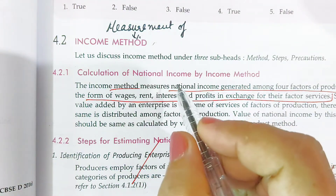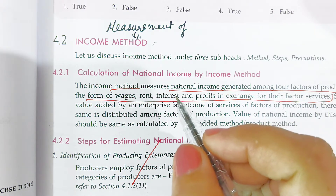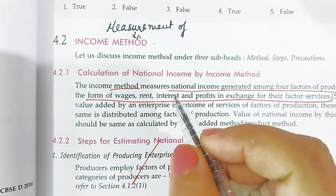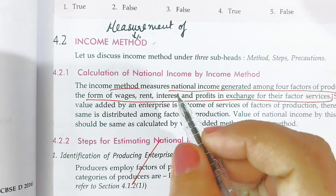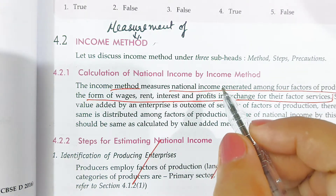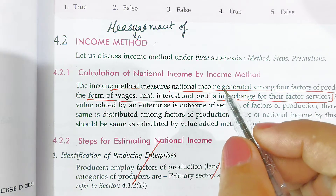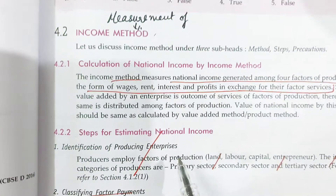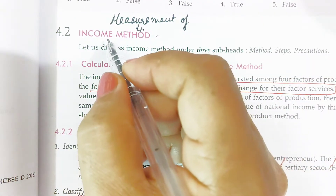Good morning students. We are proceeding to the next chapter — the measurement of national income or domestic income. In this chapter we will discuss how national income or domestic income is calculated in the economy. There are three methods: the income method, the product method or value added method, and the expenditure method. Today we are going to start with the income method.